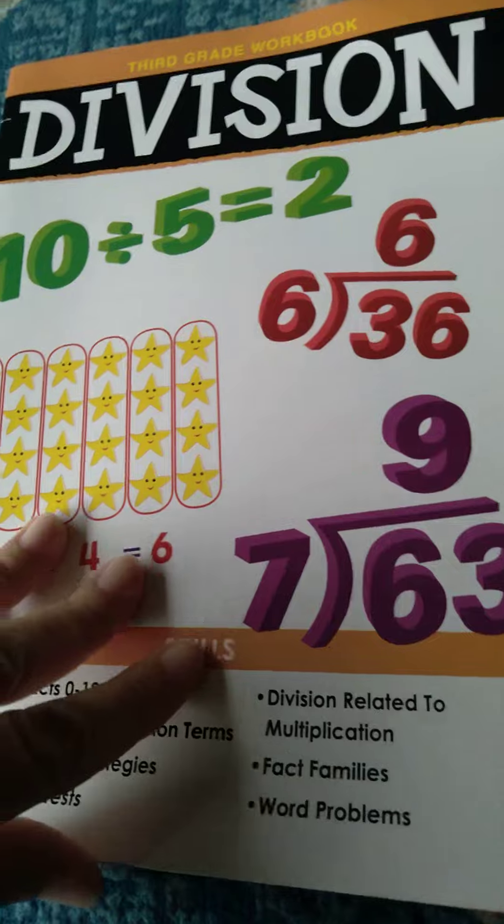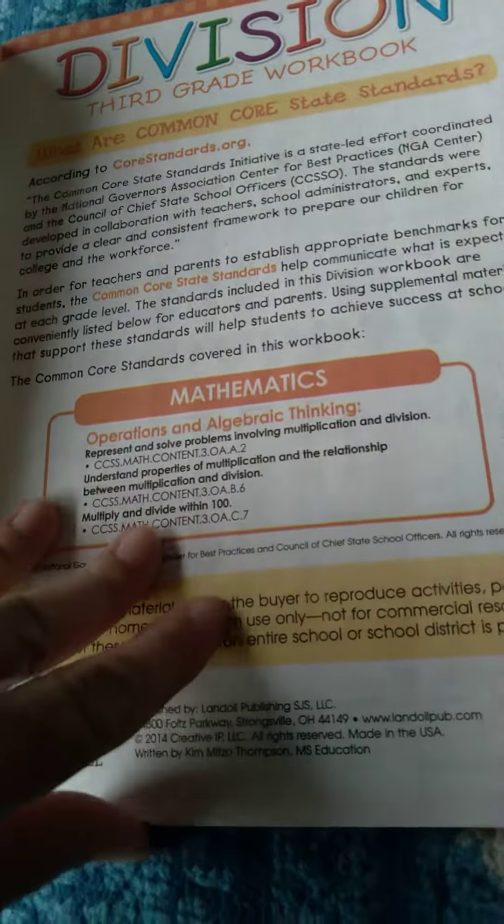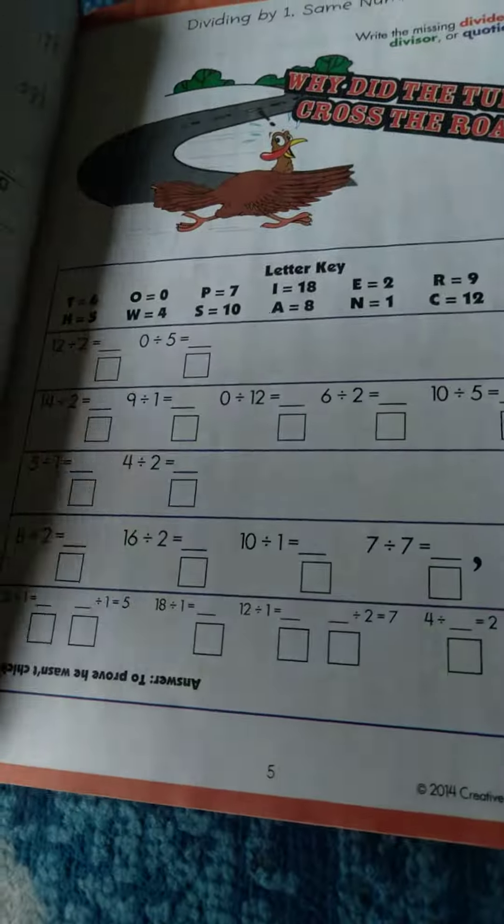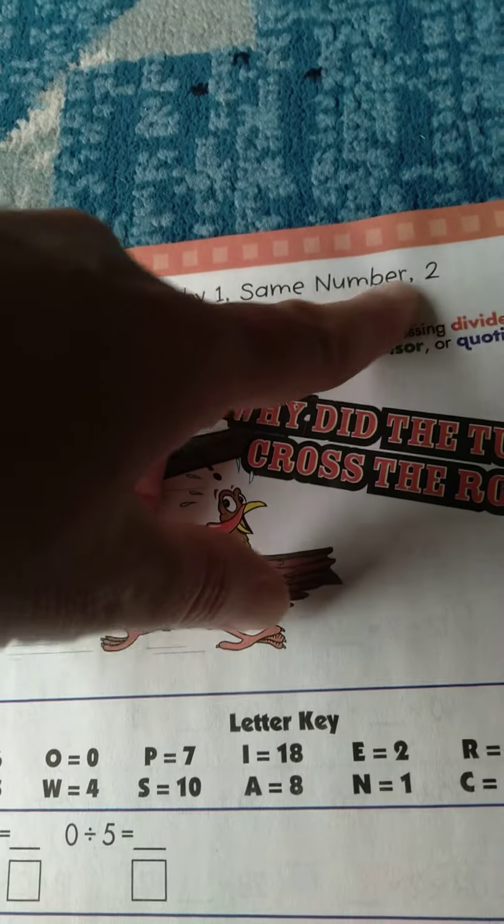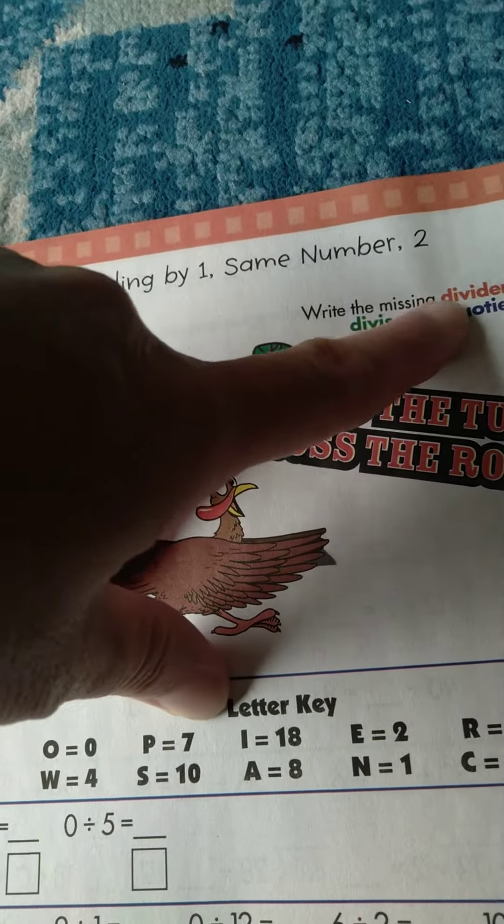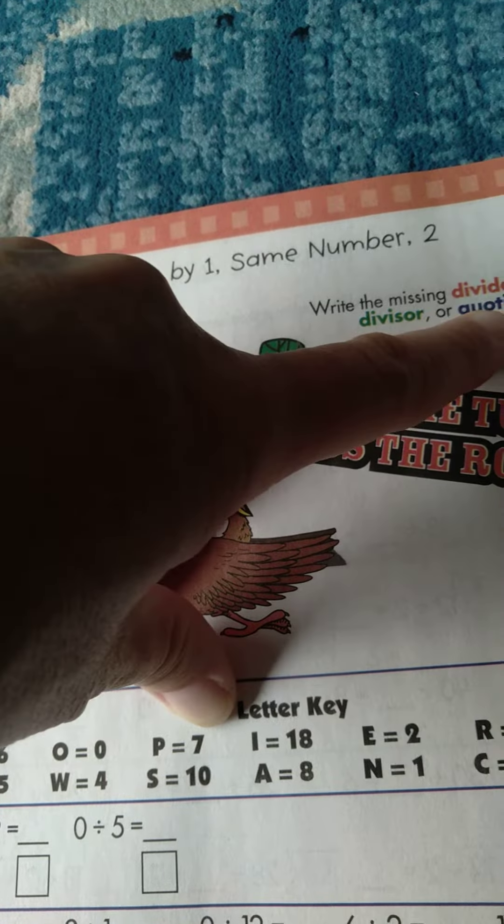So, I like this because here we are, where we have different facts, right? Dividing by one, same number. Write the missing dividend, divisor, or quotient.